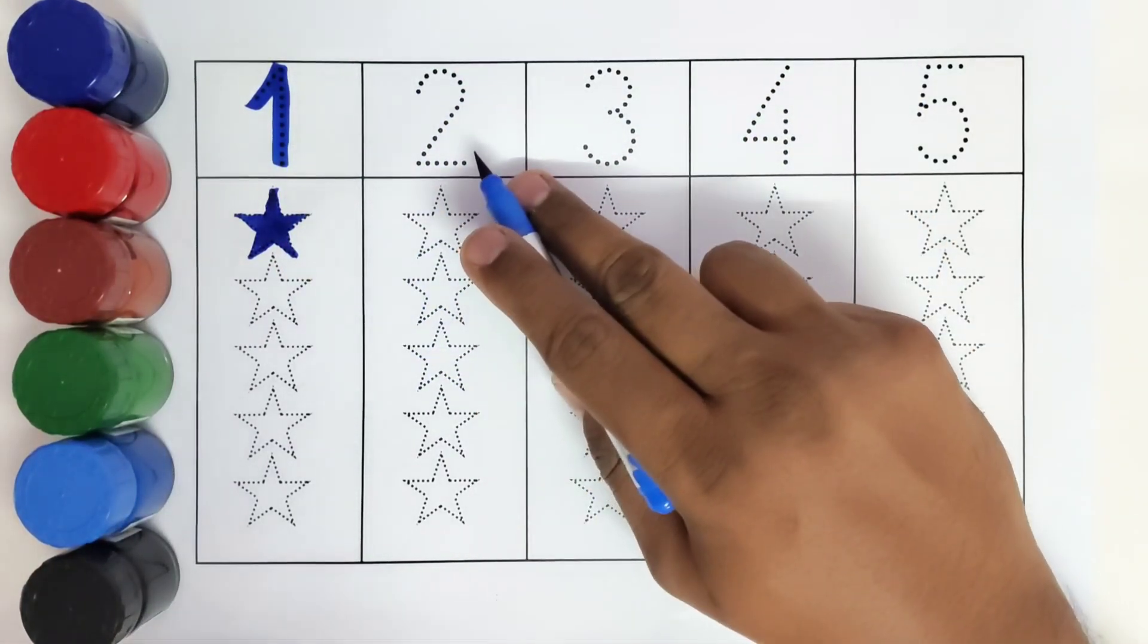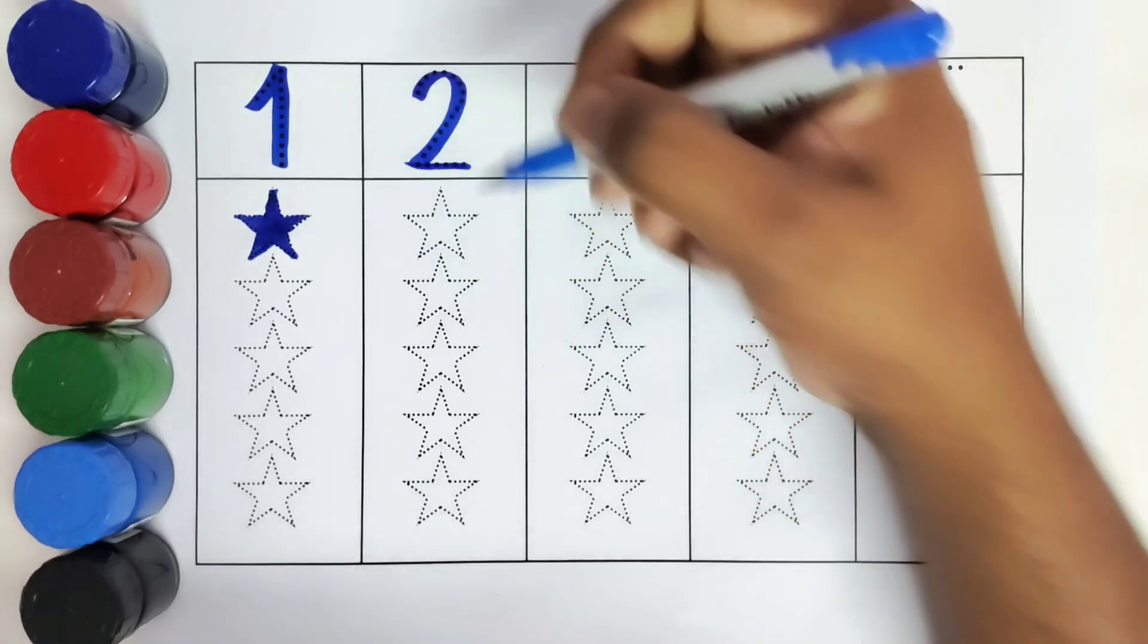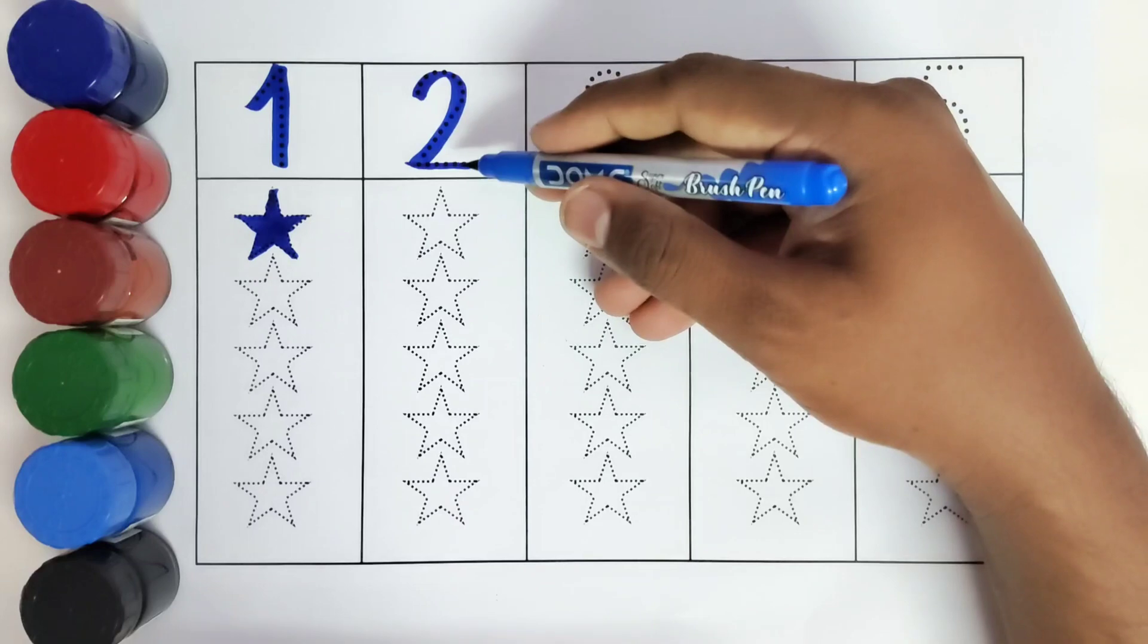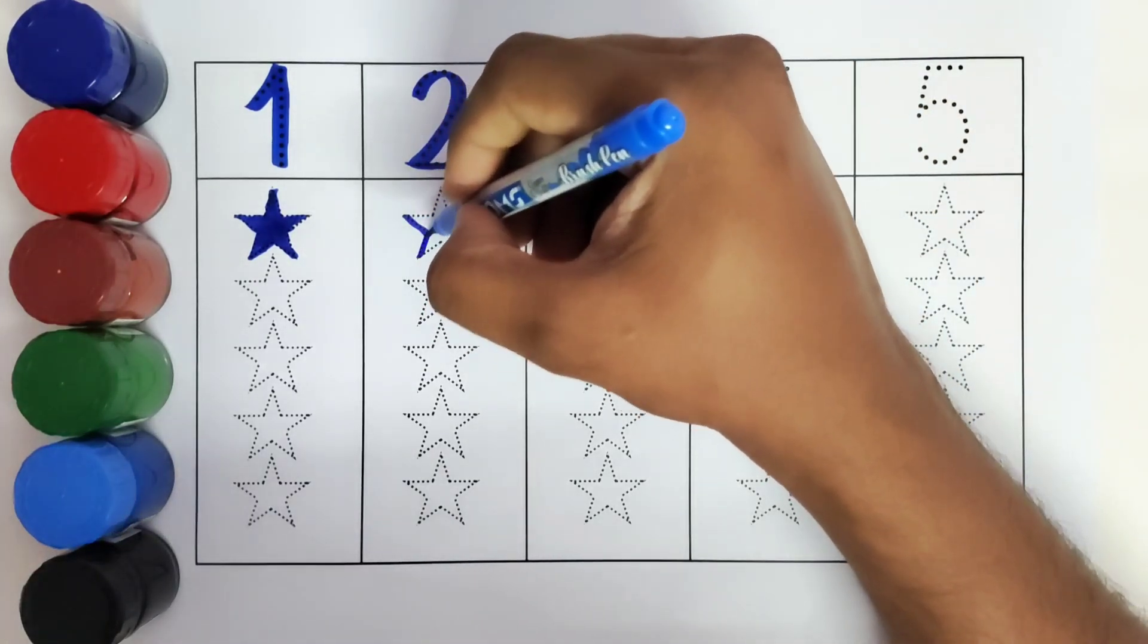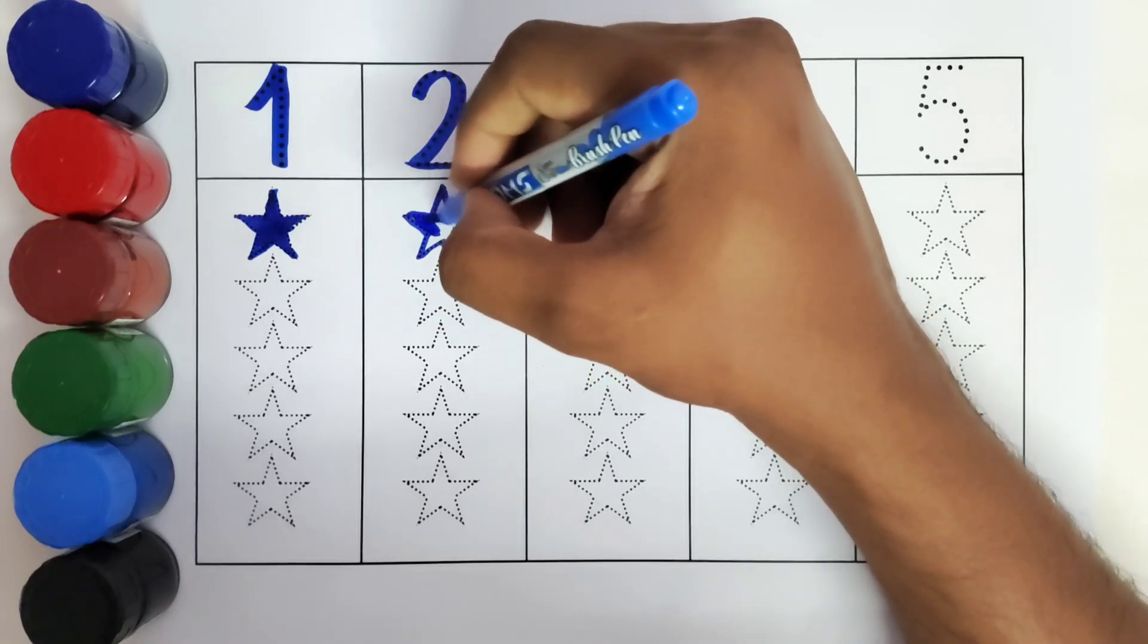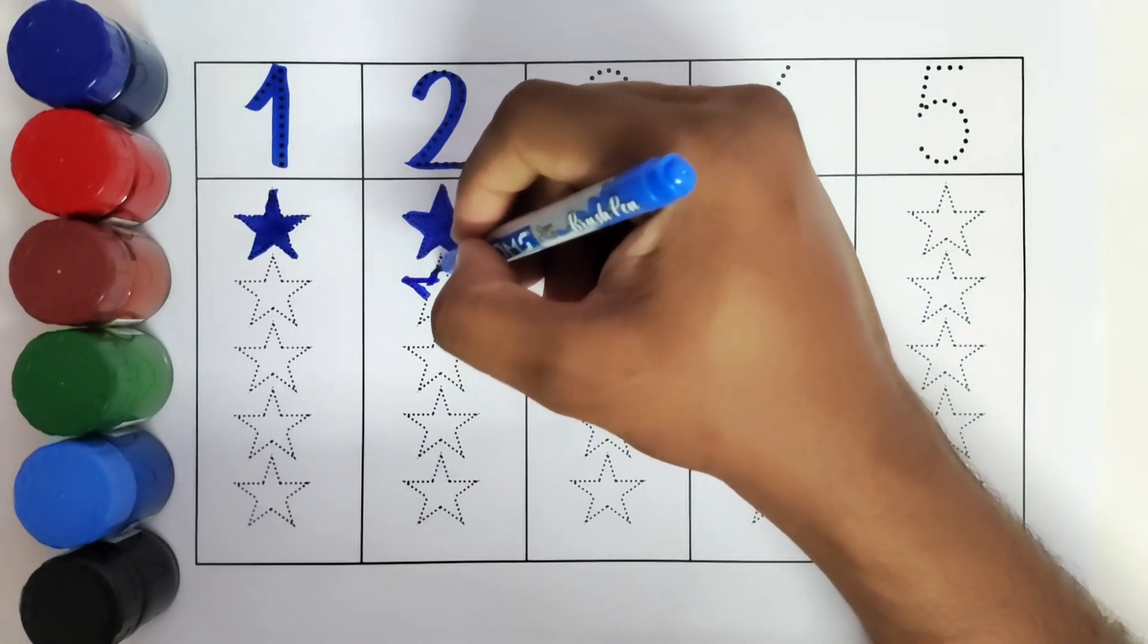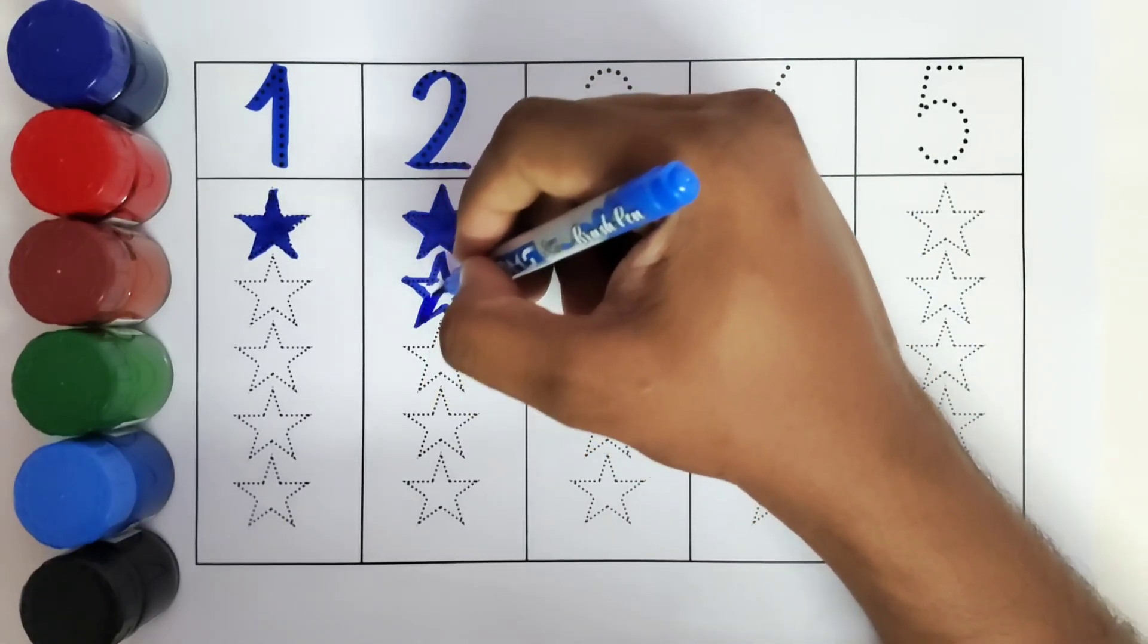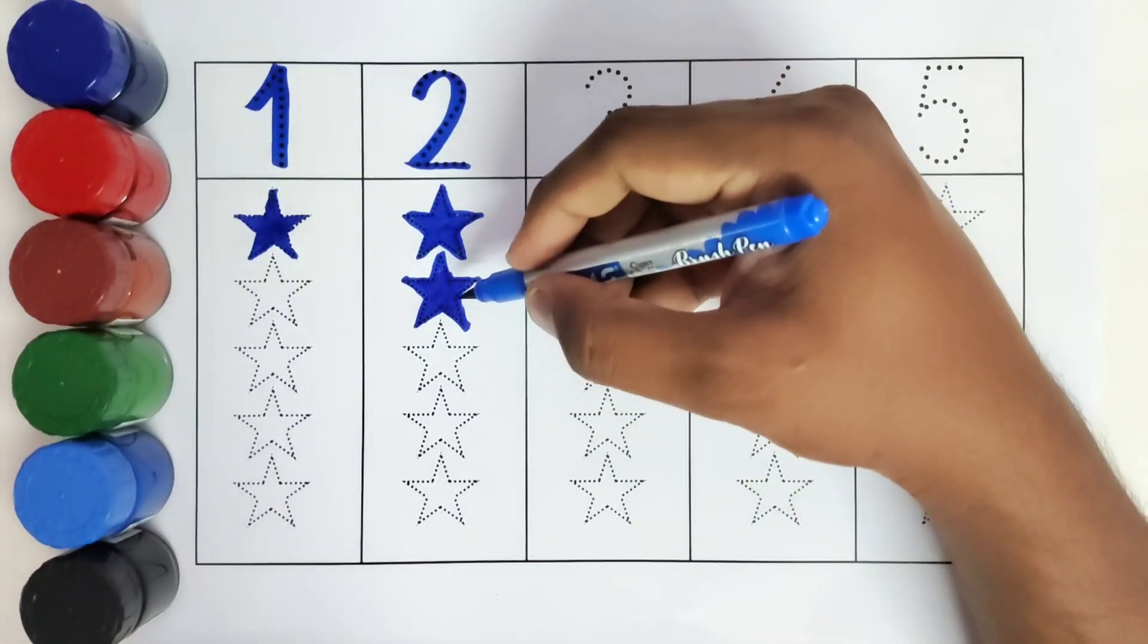This is 2. How many stars will we color? 2 stars. 1, 2. We have colored 2 stars.